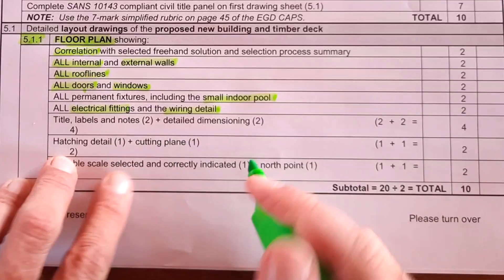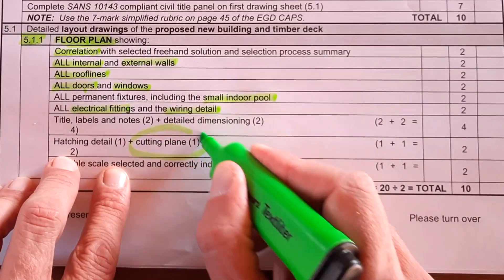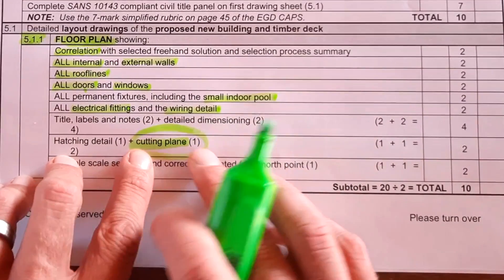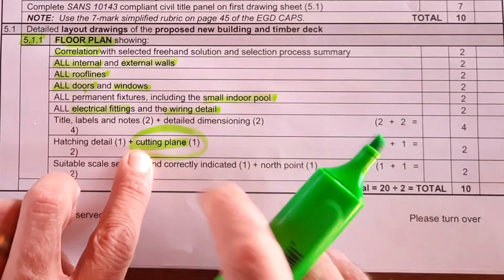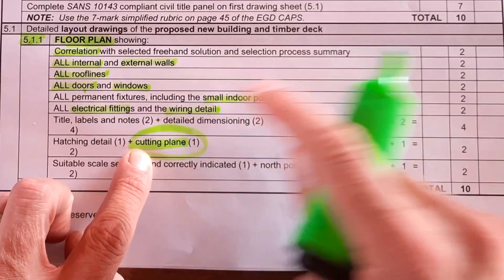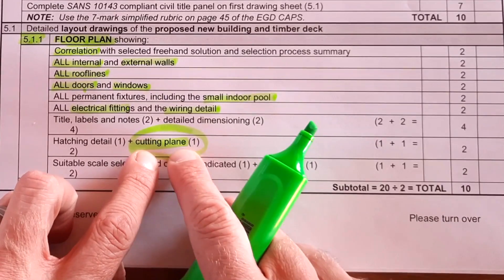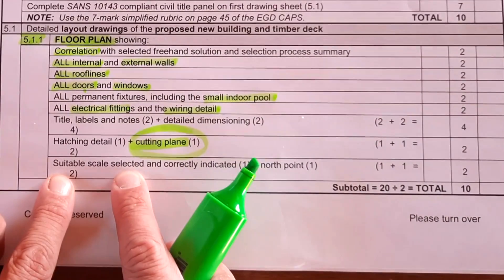Hatching detail of the inner and outer walls. The cutting plane. A lot of learners forget that. I'm going to show that to you in a moment. Do you have your cutting plane indicated? And the placement of that cutting plane is going to determine your section elevation. So make sure that is done wisely.